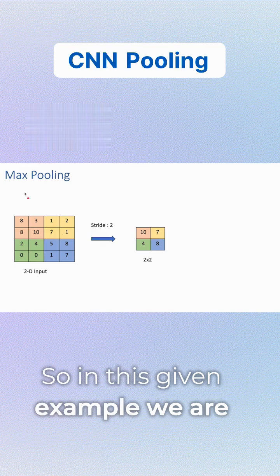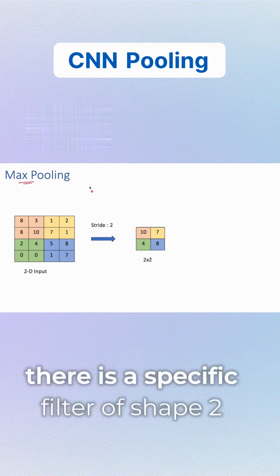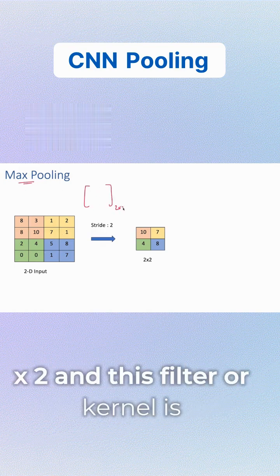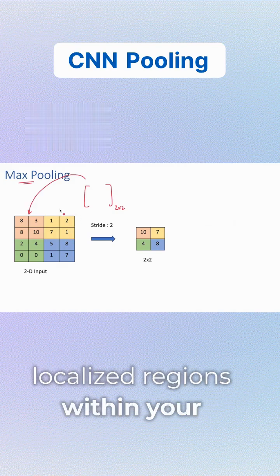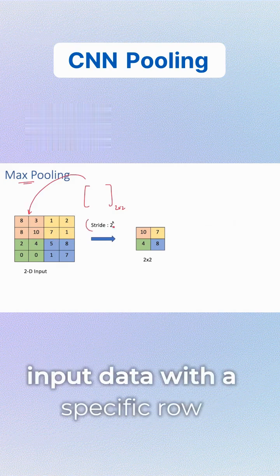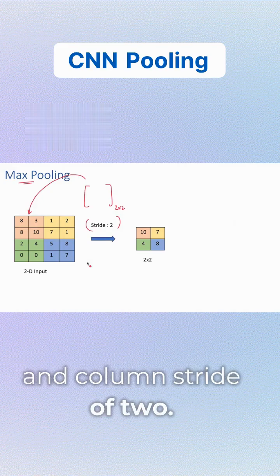In this example, we're looking at max pooling where there is a specific filter of shape 2x2. This filter or kernel is overlaid on different localized regions within your input data with a specific row and column stride of 2.